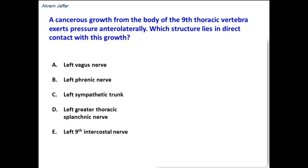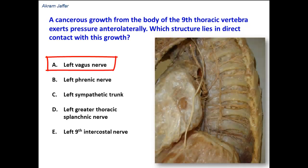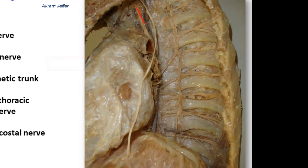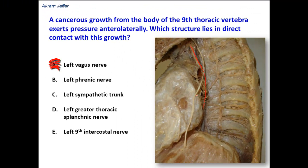First option is the left vagus nerve. If you look at the picture here, it is located in the superior mediastinum. It descends behind the root of the lung, whether the right lung or the left lung, and then it will be related to the esophagus. It is not in direct contact with the body of the thoracic vertebrae.